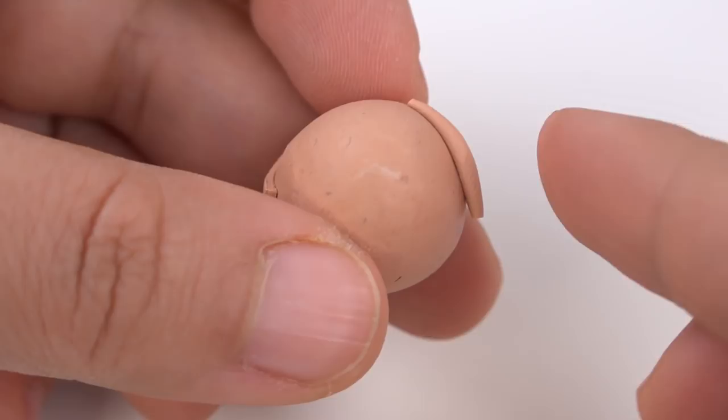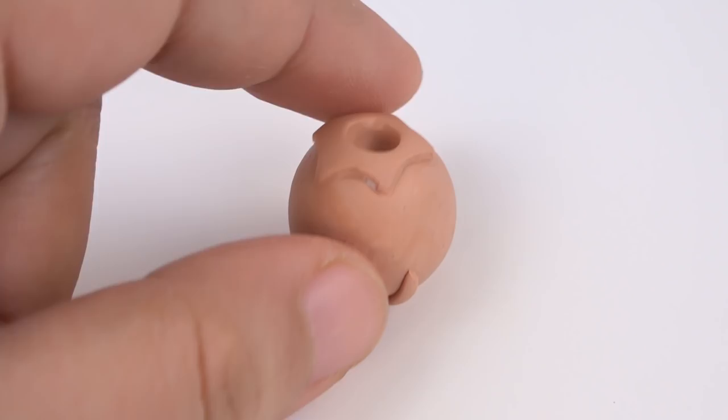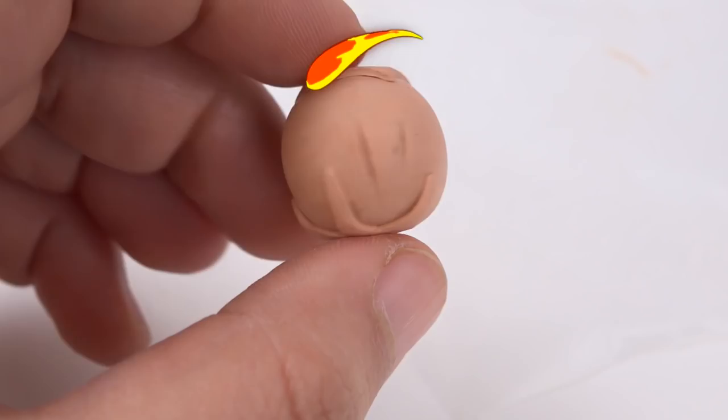Once you're happy with how it looks, pat it down very lightly and tell it you're a good little blueberry. Actually, that's just to make sure it has a flat bottom. And you're going to bake it for 15 minutes at 275 degrees Fahrenheit.